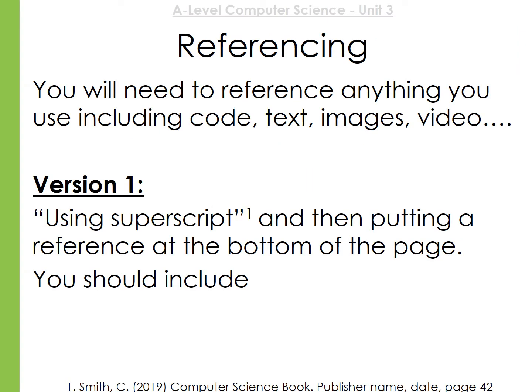Anything that you use from the internet — whether that be code, text, images, or video — all needs to be referenced. There are two different ways to do this. The first way is to use superscript: when you're writing, put a small number next to the quote, and remember the quote should be in speech marks.